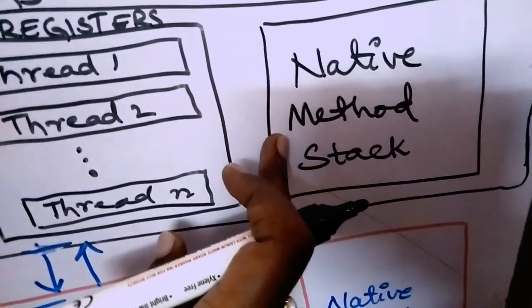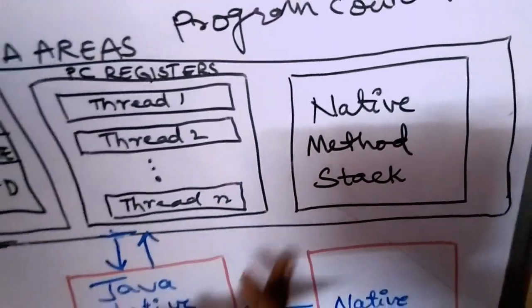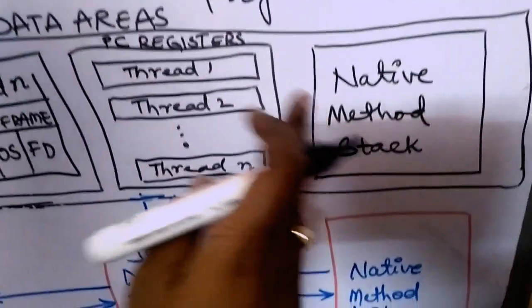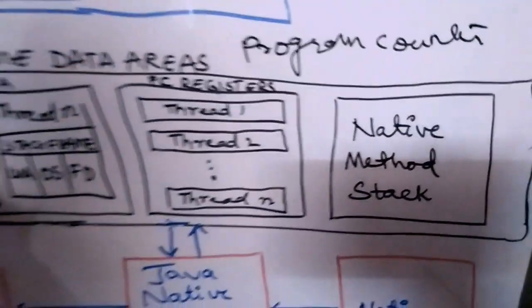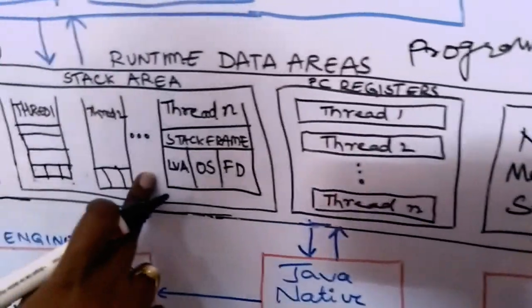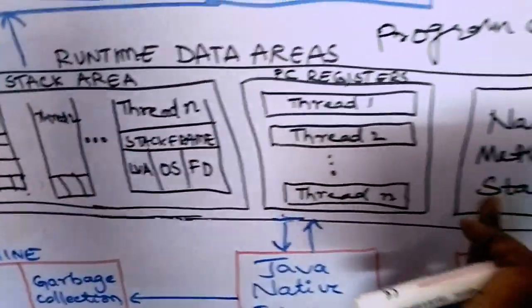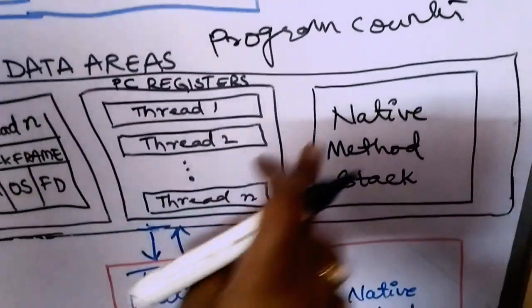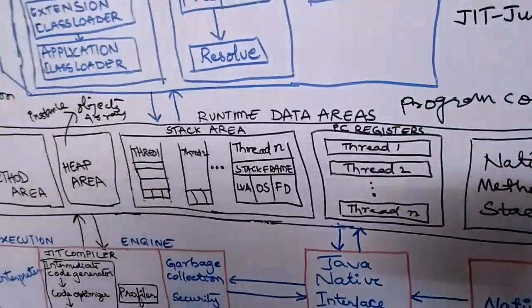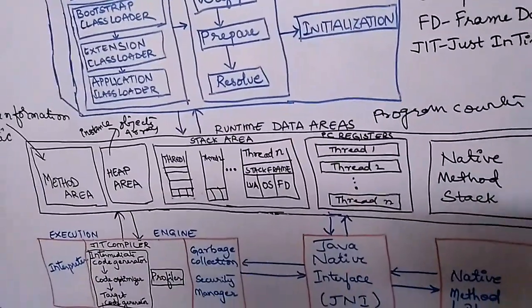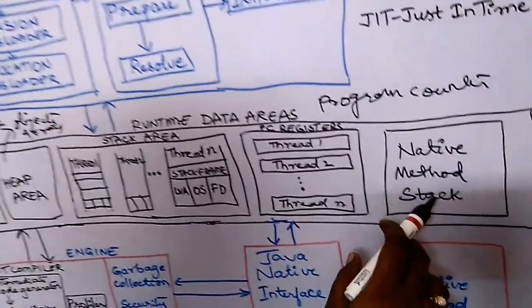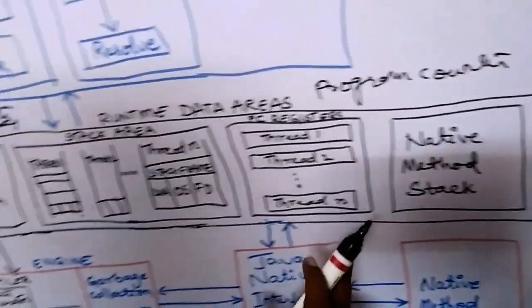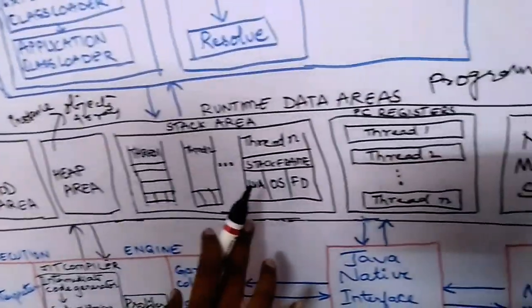The next memory area is the native method stack. If your program uses any native methods, those methods will be stored in the native method stack — it works similarly to the stack area, where for each native method there will be one stack created. So inside JVM memory there are five parts: method area, heap area, stack area, PC register, and native method stack.